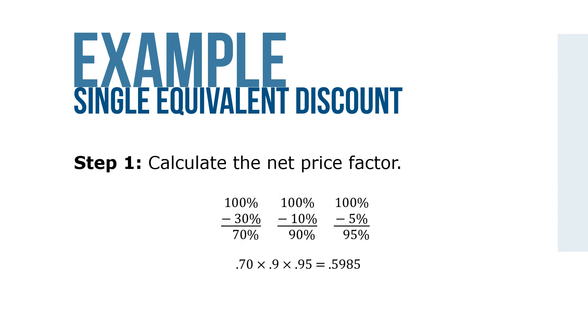Step 1: Calculate the net price factor as you see here. 0.7 times 0.9 times 0.95 equals 0.5985.